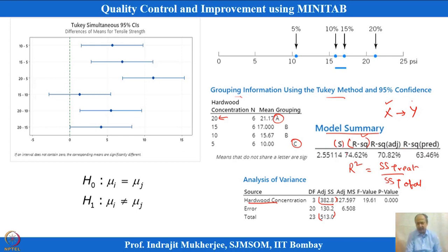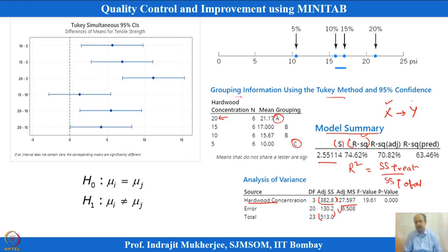The S value measures model adequacy — the lower the value, the better. This is also used in regression. S is nothing but the square root of the mean square error, which represents the standard deviation of the residuals.